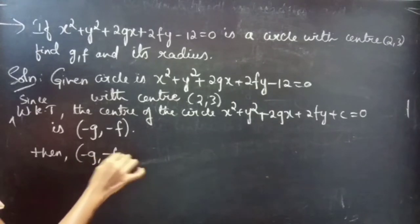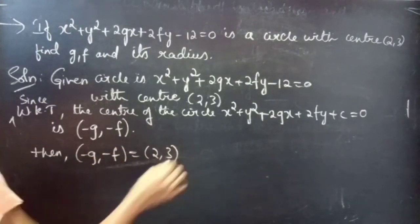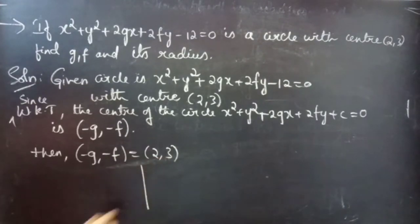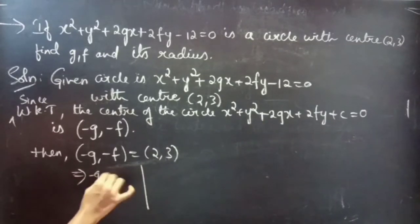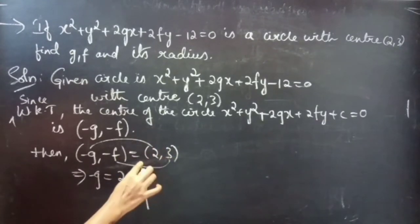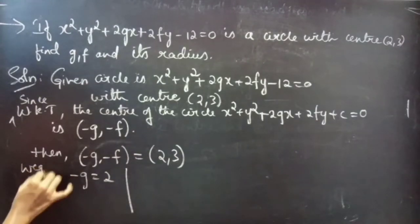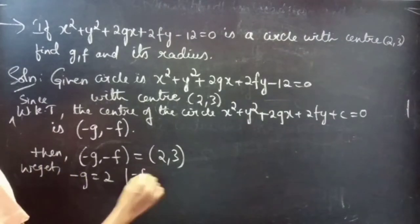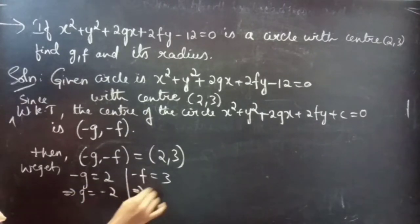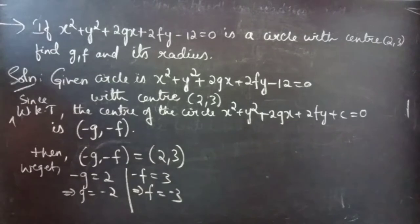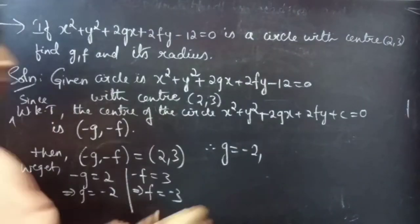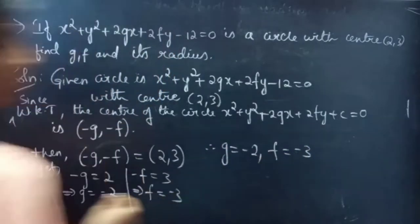Since minus g comma minus f equals to ordered pair (2, 3), we equate: minus g equals to 2 and minus f equals to 3, simply by equating x coordinates and y coordinates. Therefore, minus g equals to minus 2 gives g equals to minus 2, and minus f equals to 3 gives f equals to minus 3.